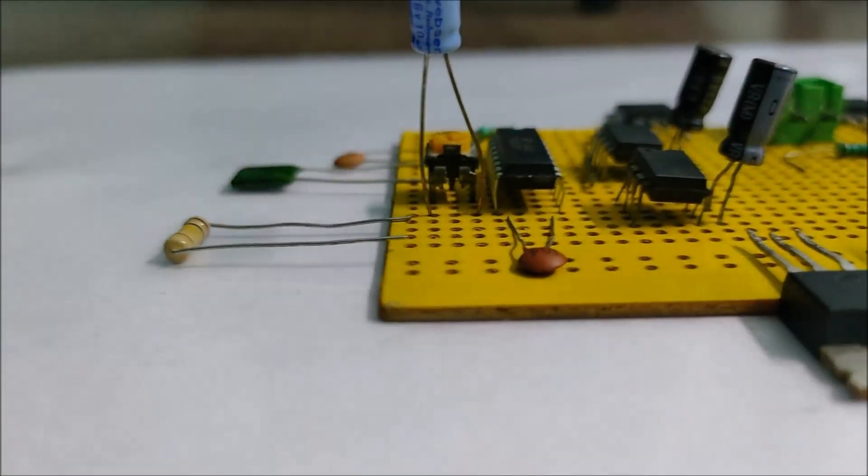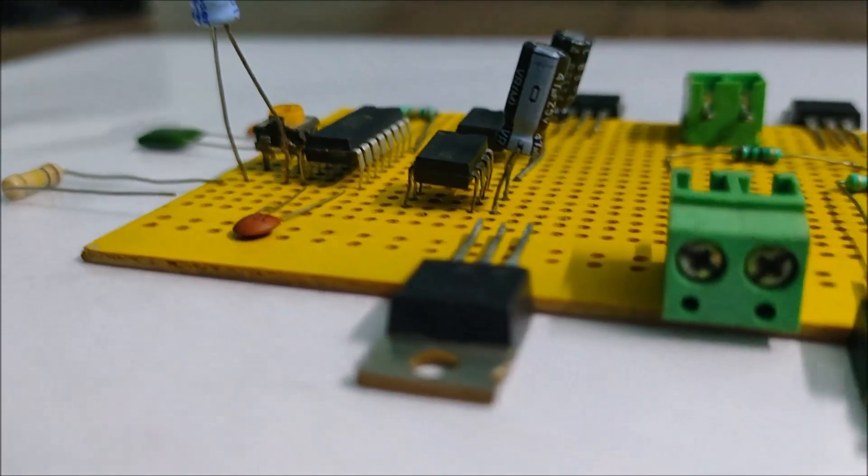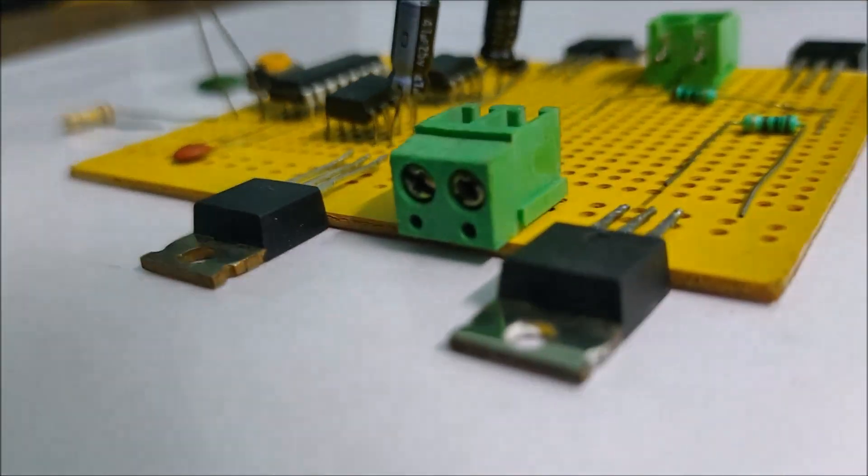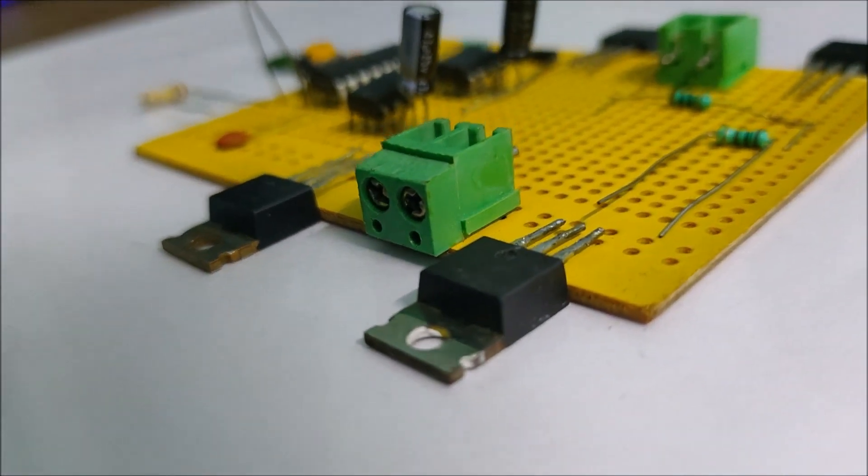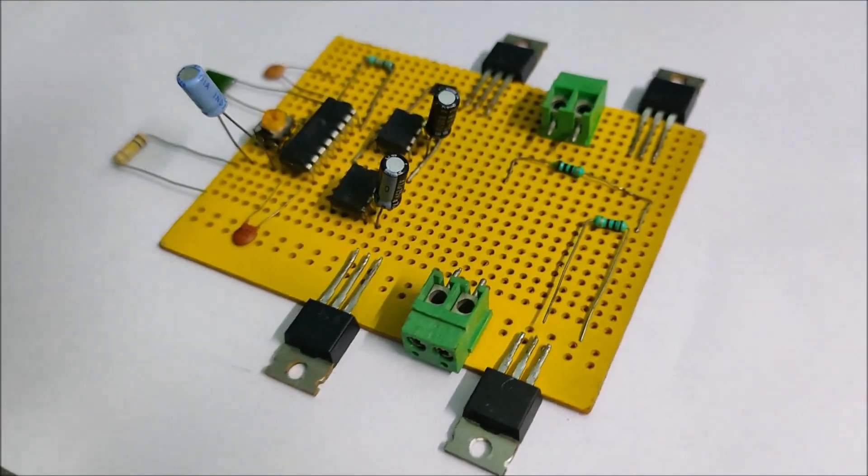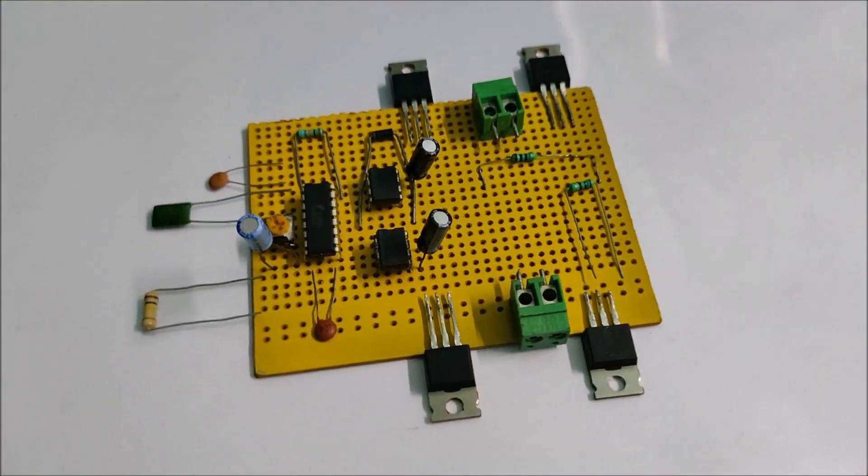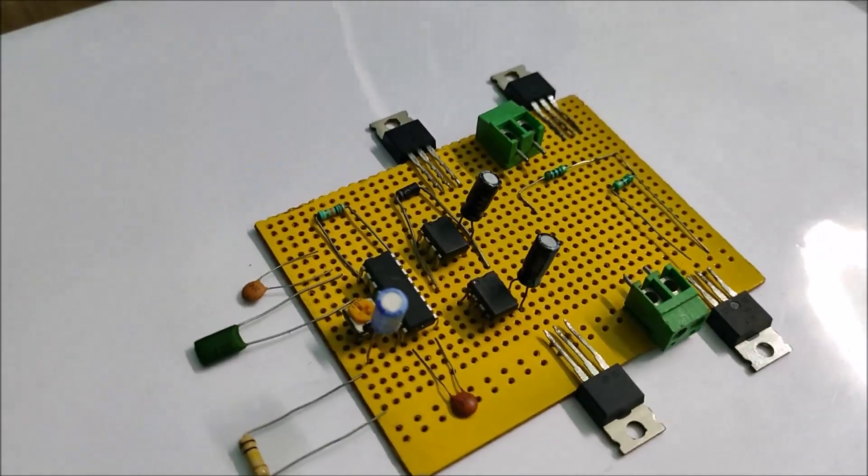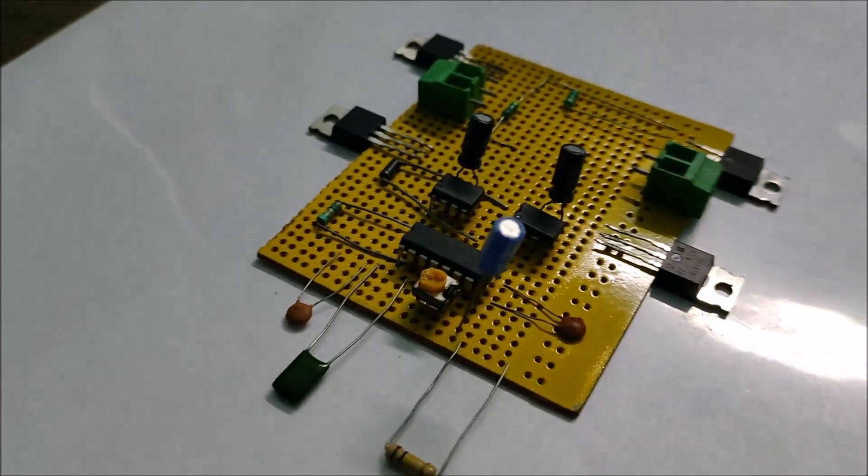Now it is important to decide the placement of the components before finally soldering them in place so that we can keep the solder traces to a minimum. This makes our circuit more sturdy, neat and the connections more stable. The use of jumper wire is also minimized.